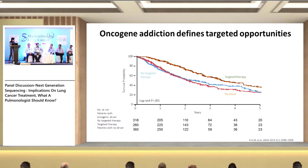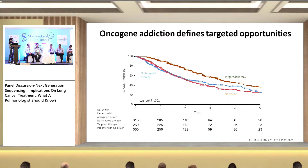Even if the lung is emphysematous and bad, if there is a mass lesion we tend to do the biopsy. Depending on whether the lesion is peripherally or centrally located, you decide whether to go for a CT-guided biopsy or a bronchoscopic biopsy. When doing the biopsy you already know from the CT what the extent of emphysema is, how far the needle has to cross through normal or emphysematous lung, and what the risk of pneumothorax is — that is the main risk. Based on that risk assessment you choose CT-guided or bronchoscopy.